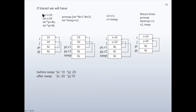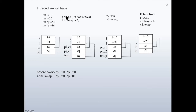Tracing the code: in the main part, integer i is initialized to 10 and integer j to 20, so memory is reserved for both. Pointer pi is declared with content address of i, so it points to i. Pointer pj is created with content address of j, so it points to j. When ptr_swap is called with pi and pj as arguments, the parameters v1 and v2 are references to pointer.